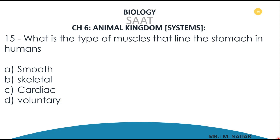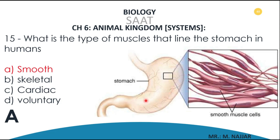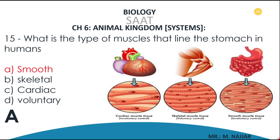Question number fifteen: what type of muscles line the stomach in humans? A) smooth, B) skeletal, C) cardiac, D) voluntary. The correct answer is A — smooth. The stomach is lined by smooth muscle cells. We have three types of muscles: smooth muscles line the internal organs such as the gastrointestinal tract and bladder; skeletal muscles attach to the bones; and cardiac muscle is only for the heart.